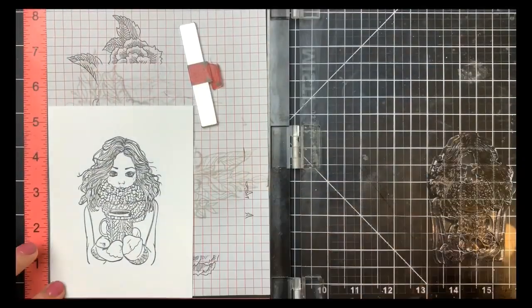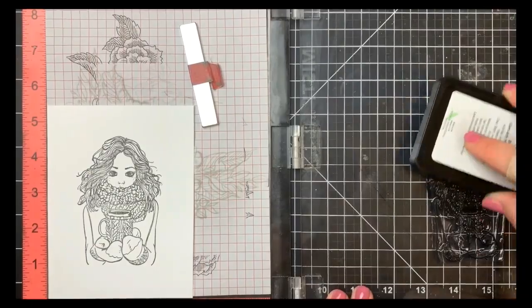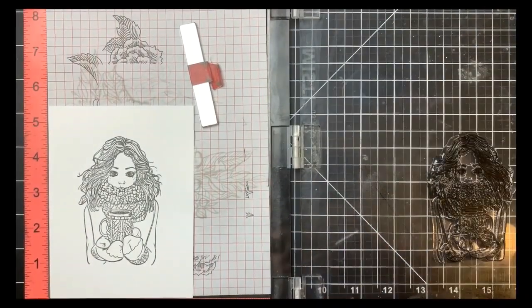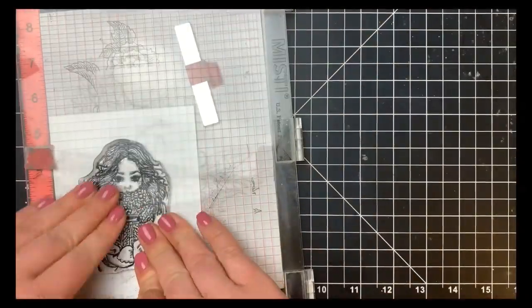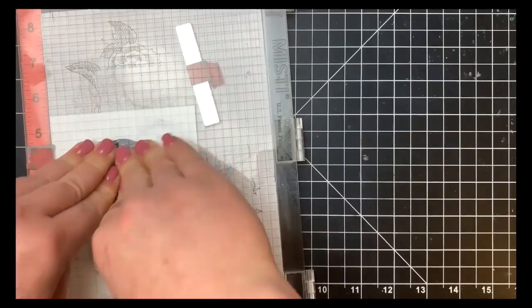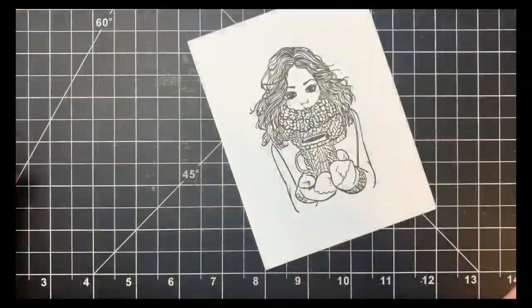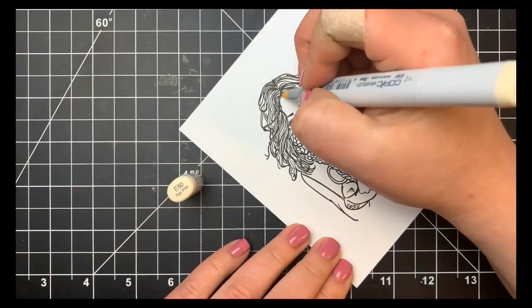I definitely had to stamp this twice. It was okay, but I like a really crisp black image. So I stamped it twice, making sure my paper was lined up the same exact way each time, and we'll move on to the Copic coloring.